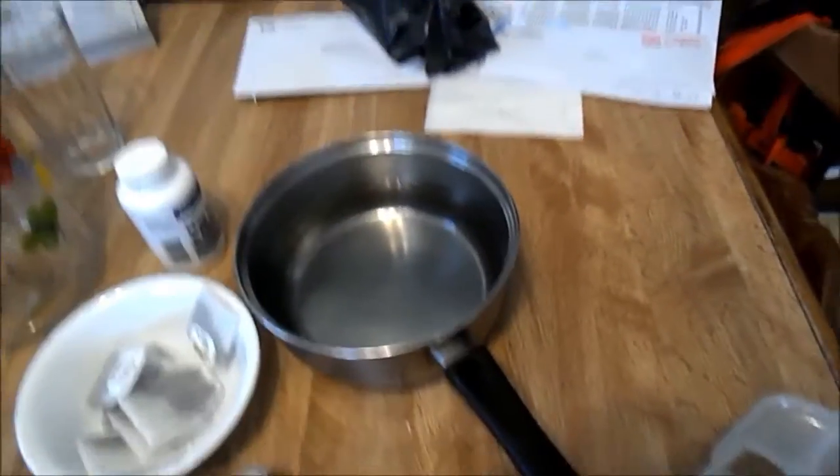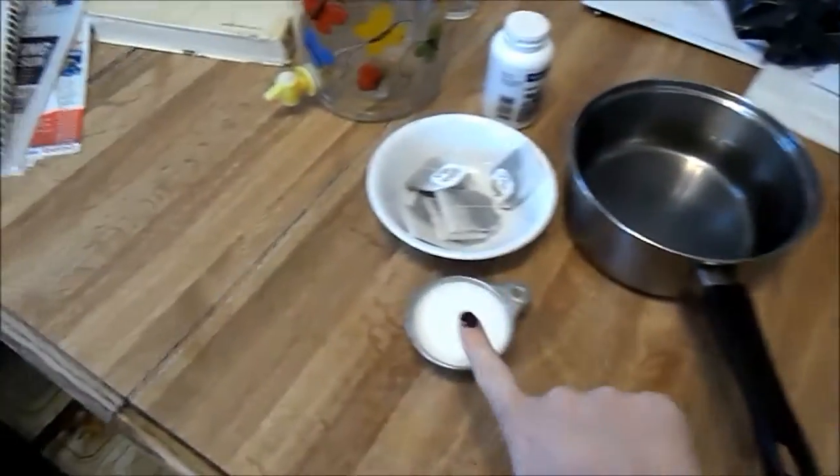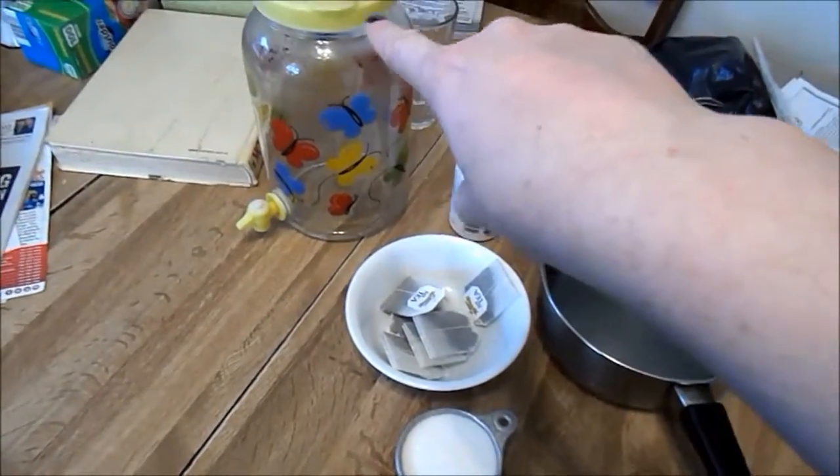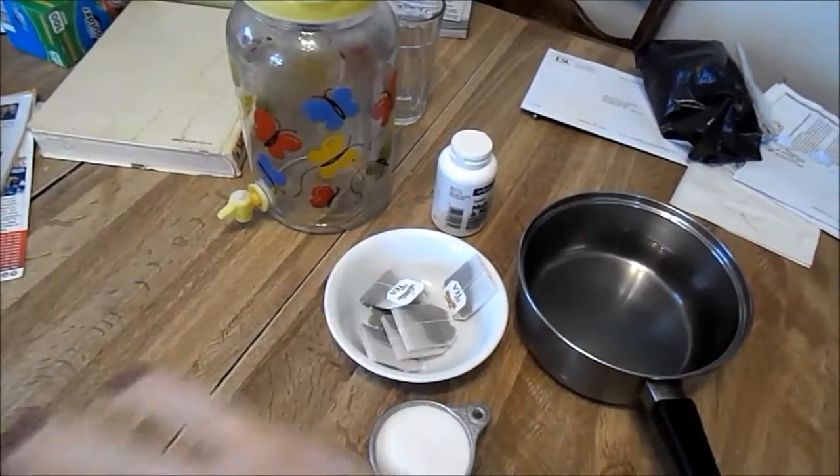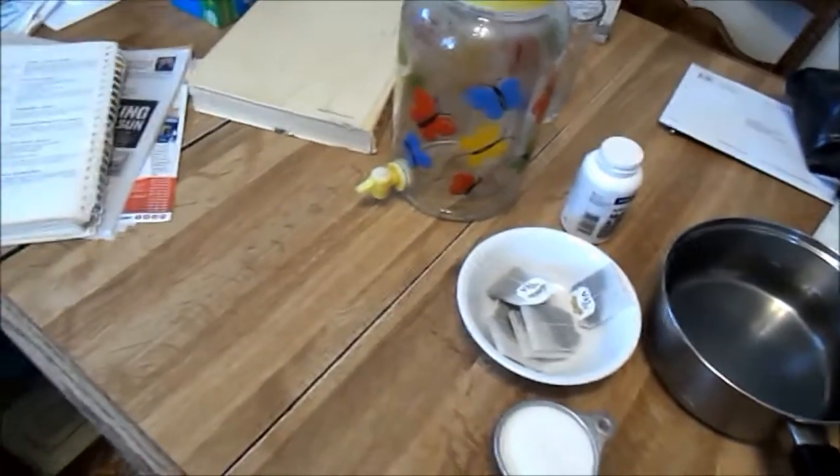For our sweet tea drink, we're going to need four cups of water, a half cup of sugar, eight tea bags, a pitcher of some sort, a whole tray of ice cubes, and lemon is optional depending on what tea you're using.